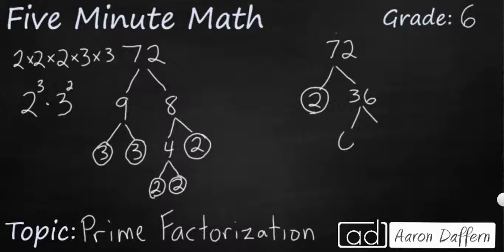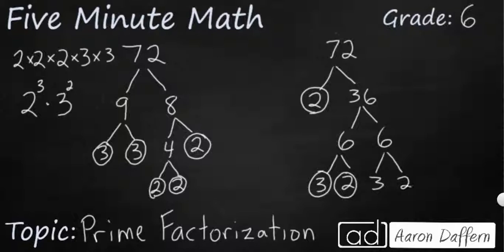Now we've got 6 and 6. We could have done 9 and 4, it would give us the exact same answer. 6 and 6, they're both composite. So I'm going to break them down the same way: 3 times 2, prime, prime. 3 times 2, prime, prime. So look at what we have left.